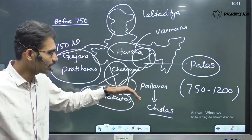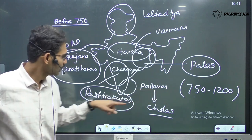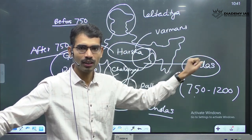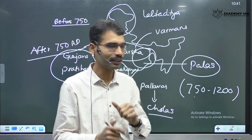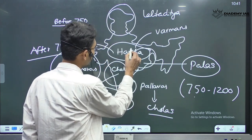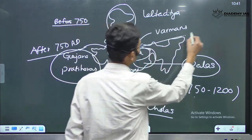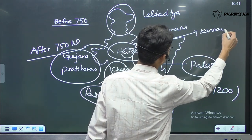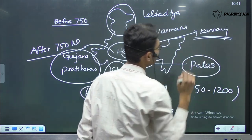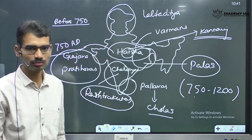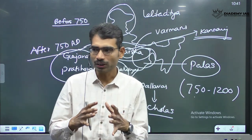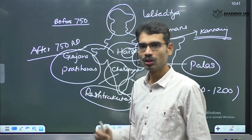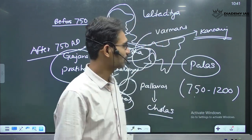But before the emergence of Cholas, Rashtrakotas, Gurjara Pratiharas, and Palas were very powerful. These three rulers were fighting for an important location called Kanauj. This became an important prize for the people ruling the Indian subcontinent.